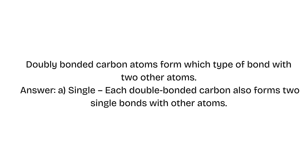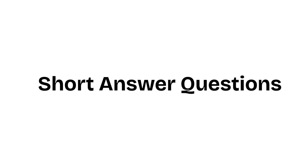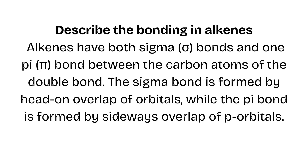Short answer questions. Describe the bonding in alkenes: Alkenes have both sigma bonds and one pi bond between the carbon atoms of the double bond. The sigma bond is formed by head-on overlap of orbitals, while the pi bond is formed by sideways overlap of p-orbitals.